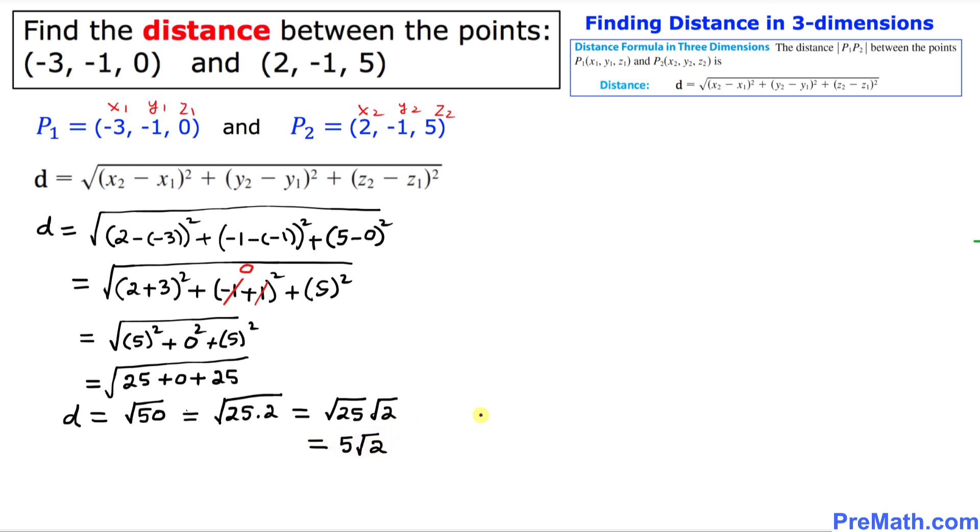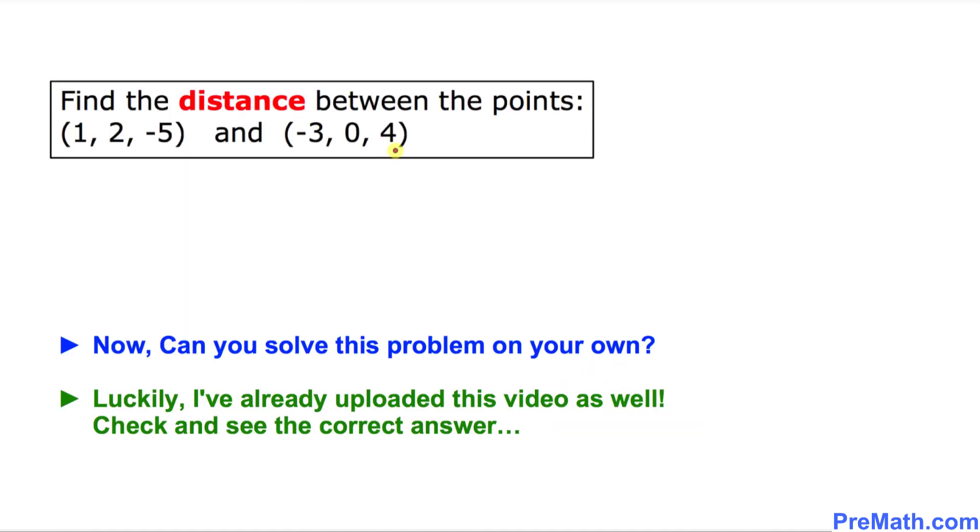Thus, our distance d turns out to be 5 times square root of 2, and that is our answer.